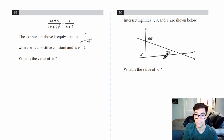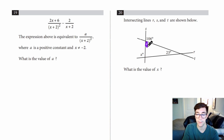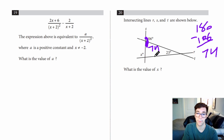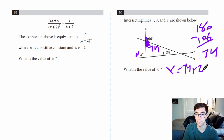Last question, number twenty: intersecting lines R, S, and T are shown. What is the value of X? First, find the supplementary angle: 180 minus 106 equals 74. Then using the exterior angle theorem — the exterior angle equals the sum of the two non-adjacent interior angles — X equals 74 plus 23, so X equals 97.